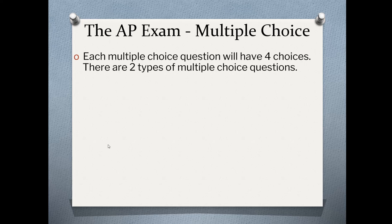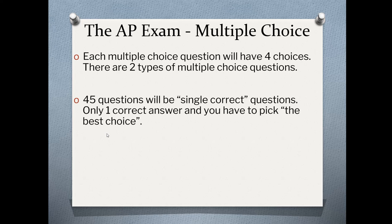Now, to go into a little bit more detail about the multiple choice, each of the multiple choices will have four choices to choose from. And there's two different types of them. So one of the types, the ones that you're going to see the most often, are 45 questions, single correct questions. These are your typical ones that you've seen. Only one's the correct answer. Pick the best choice. That's it. Easy enough.